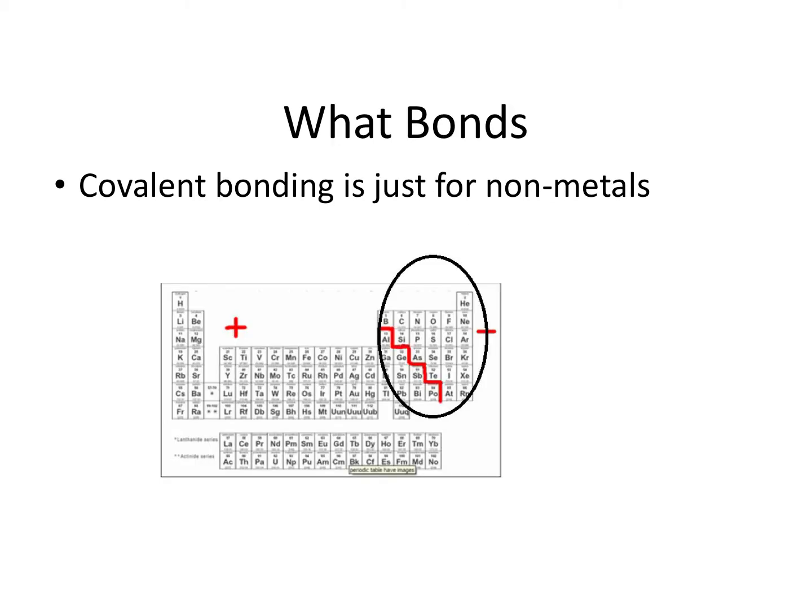Now, covalent bonding is just for non-metals — there are no metals attached to this. Covalent bonding — those non-metals are like they form their own little country club; they're not letting any metals in. You can't join us. Covalent bonding: just non-metals. We're going to be focusing on the right-hand side of the periodic table.